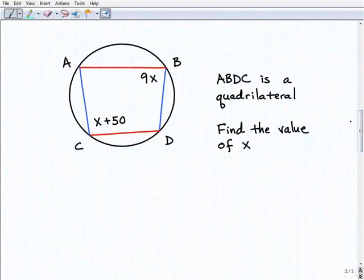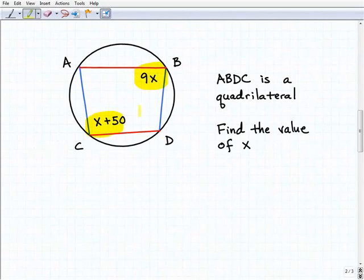Here we have a quadrilateral, a four-sided figure, and each one of these angles is an inscribed angle. We had a theorem that talked about the opposite angles. It said opposite angles are supplementary. So this angle here and this angle here are opposite angles. If we add those two angles up, they're going to equal 180 degrees.